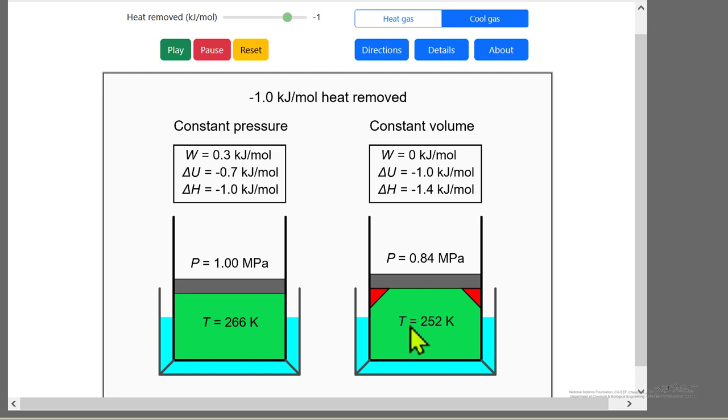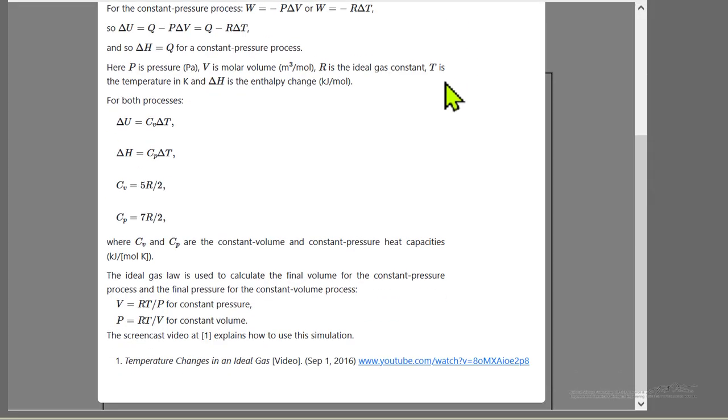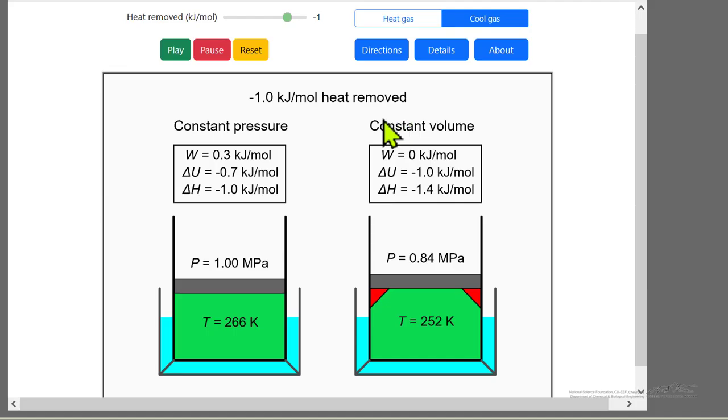For the constant volume system, the temperature is different. Temperature's higher than constant pressure because we did some work as the piston moving down. Well, the details, the equations used are shown here. And the idea is to understand what's happening applying the first law to an ideal gas in a piston and cylinder.